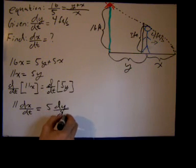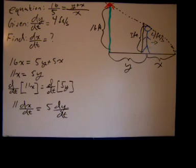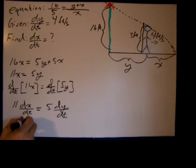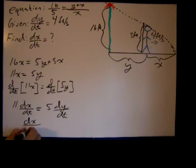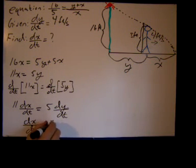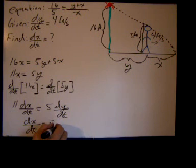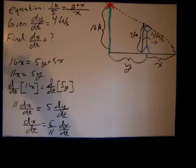And now I look and see what I wanted. Well I wanted dx/dt, so I'll solve for dx/dt. And dx/dt equals 5 over 11 times dy/dt.